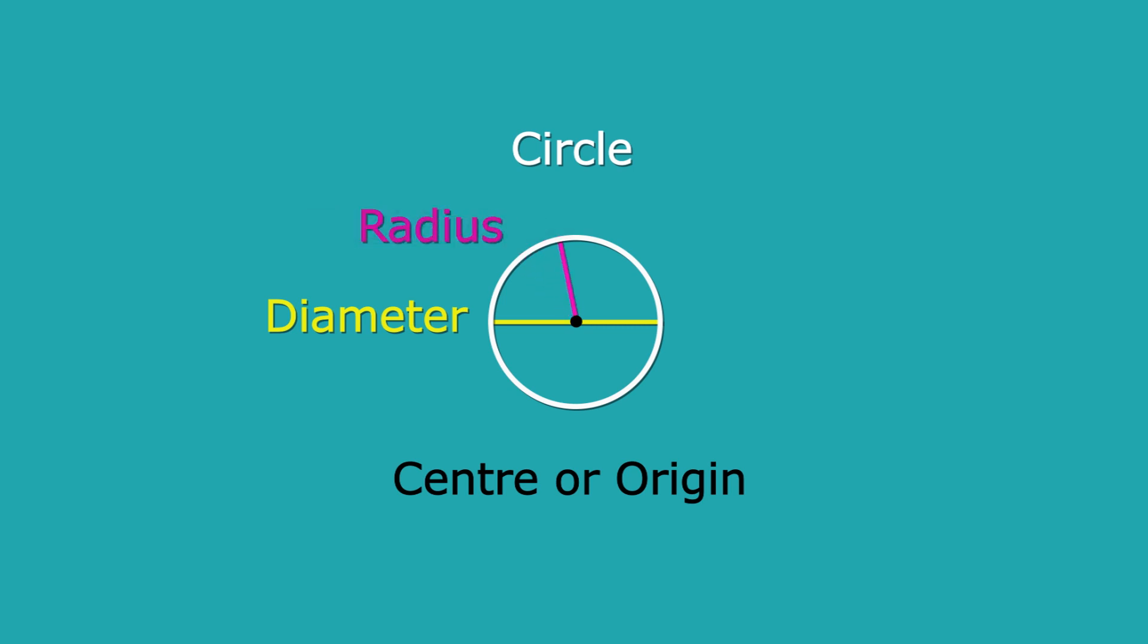To start with, let's just review circles. This is a circle. This point here is called the centre, or the origin of a circle. This yellow line is the diameter, and that is the distance from one edge of the circle to the other edge of the circle through the centre. And this pink line is the radius, and that is the distance from one edge to the centre of the circle. And the radius is always half of the diameter.